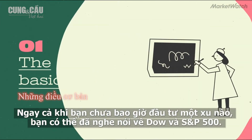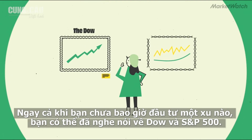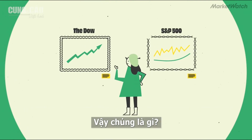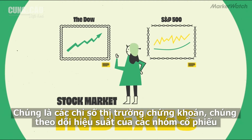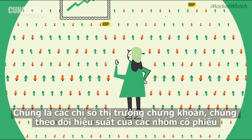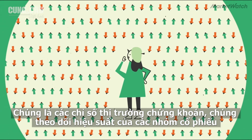Even if you've never invested a penny, you've probably heard of the Dow and the S&P 500. So what are they? They're stock market indexes, which means they track the performance of groups of stocks, and the result is a broad measure of the overall gains or losses in the market.